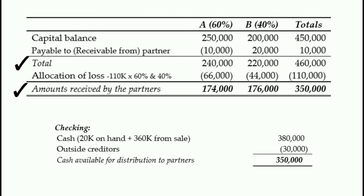Let's verify the 350,000 pesos. Cash on hand: 20,000 pesos; net proceeds: 360,000 pesos. Total cash available: 380,000 pesos. Deduct accounts payable: 30,000 pesos. Cash available for distribution to partners = 350,000 pesos. This confirms the total cash distributions of 350,000 pesos is correct.